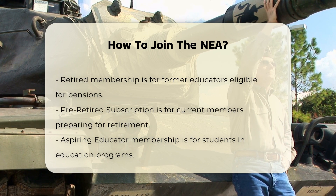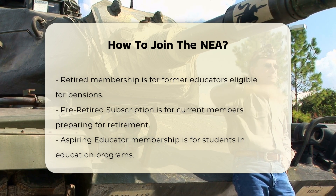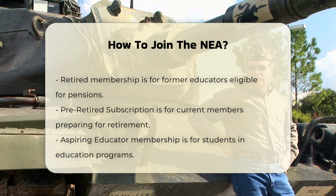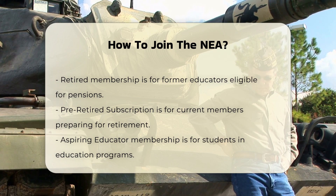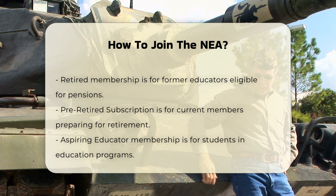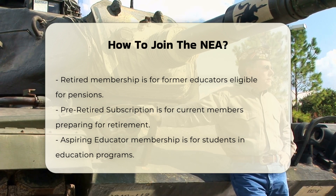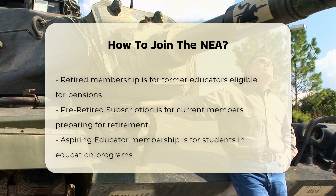Joining Process. Step 1: Select your membership type — choose the membership category that best fits your current role or status. Step 2: Find your state affiliate — use the NEA's state map to find and join through your local state affiliate. This is crucial because membership is unified at the local, state, and national levels.